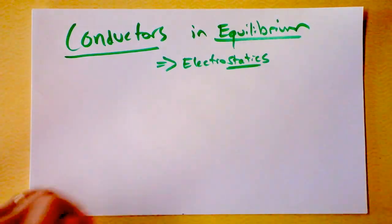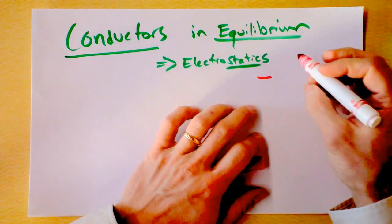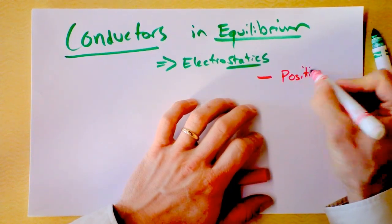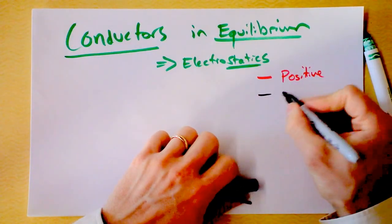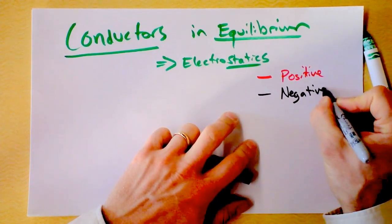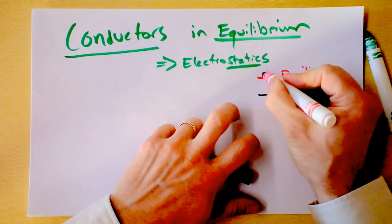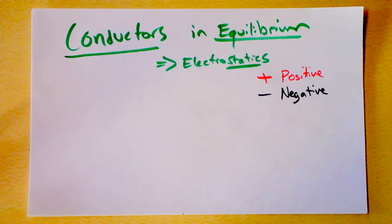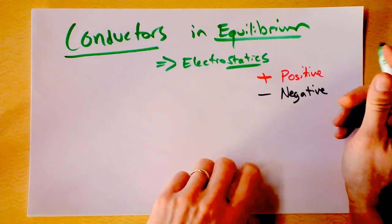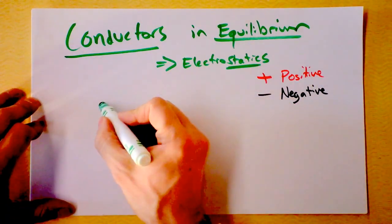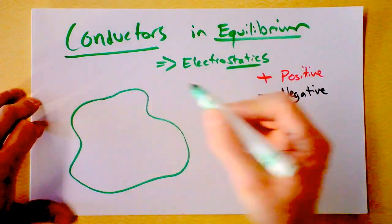I'm going to use the convention that red is positive. This is a common DC convention, and black will be negative. If you want to be super fancy, you could write positive and negative. Generally, if you open up some piece of electronics — like your car, for instance — they're going to be using that convention.